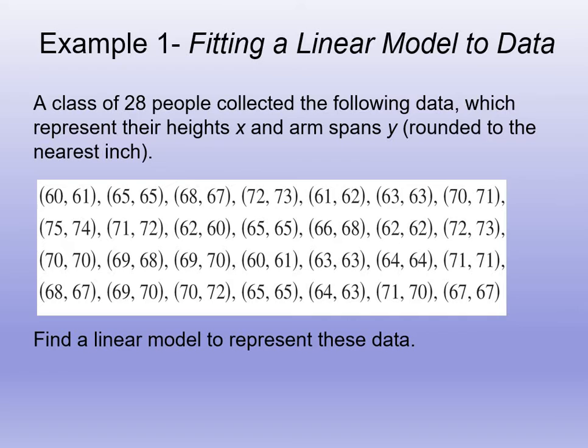So example being a class of 28 people collected the following data, which represents X is their height, and Y is their arm spans. Notice there's an ordered pair. The first one is 60, 61. The next one is 65, 65. So those are each an X and a Y.